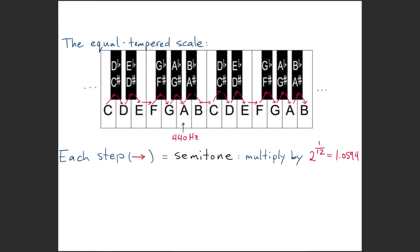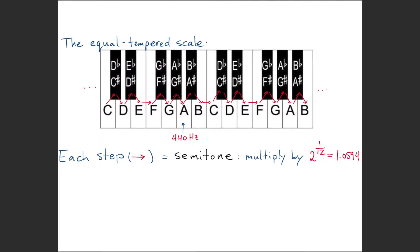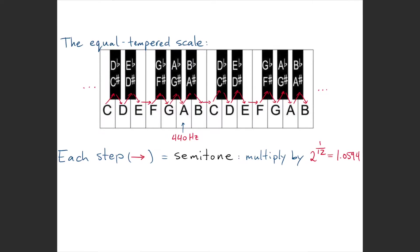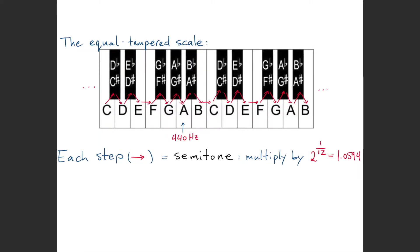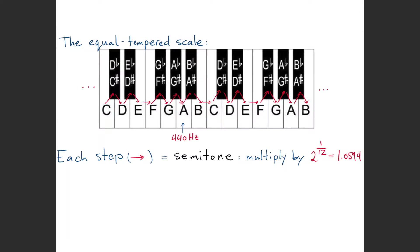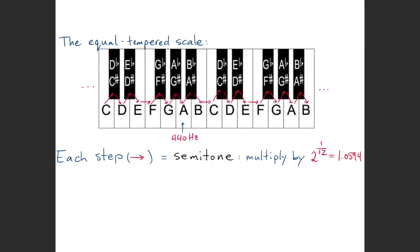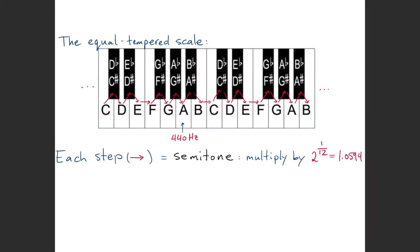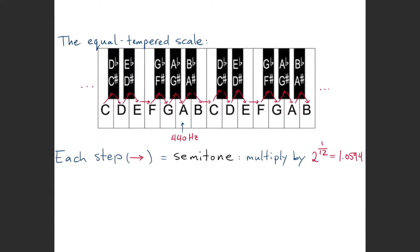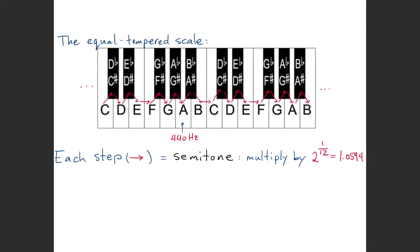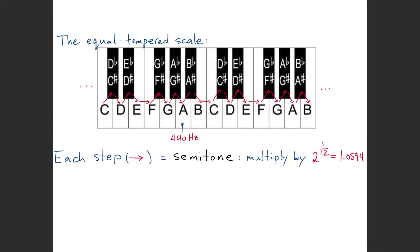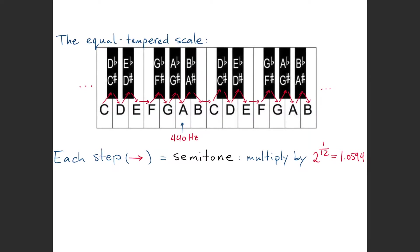From there we define all of the other notes by the interval of a semitone, which we take to be exactly 1/12th of an octave. When we speak about intervals in music, these correspond to multiplying the frequency by a certain amount instead of adding a certain number of Hertz.